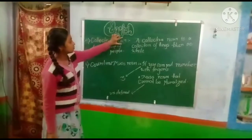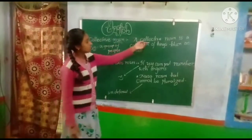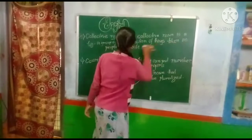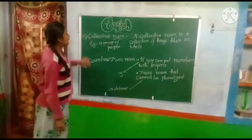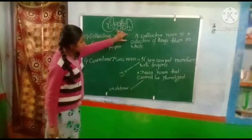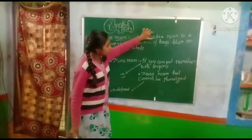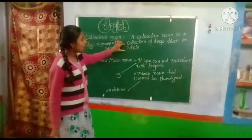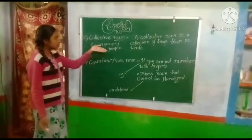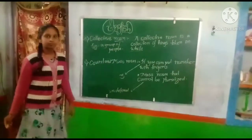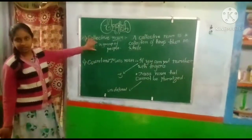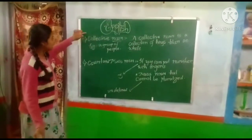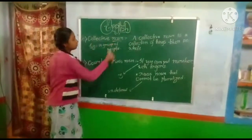Next one is collective noun. A collective noun is a collection of things taken as a whole. For example, a group of people, a group of kittens, a group of dogs. We can take many examples for collective noun.